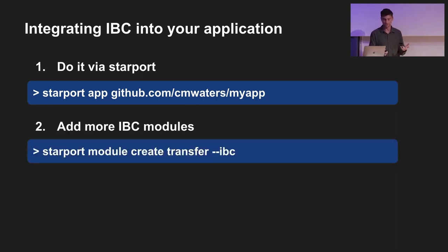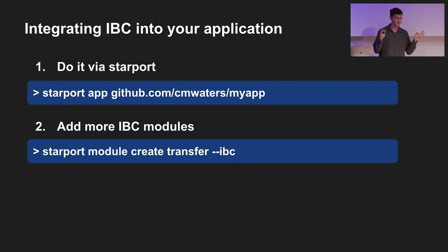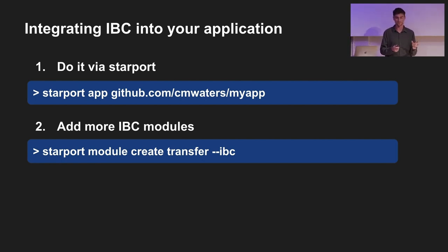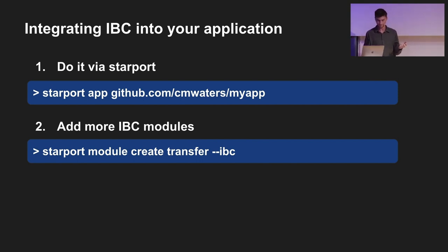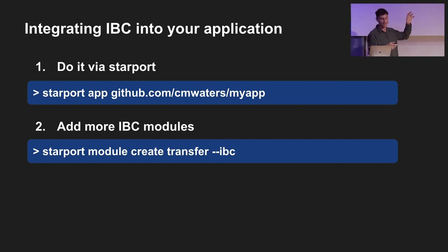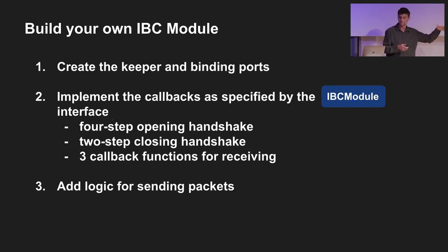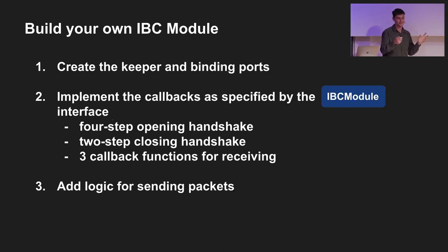If you want to create a module, just as Harpreet explained, you run `starport module create`, with the module name and the `--ibc` flag. That sets up all the scaffolding for how you actually hook your module and connect it to what the IBC stuff does - done through an interface. The scaffolding does the job of creating the keeper and binding ports. A bit more detail than my network card analogy: the way that IBC works is you have channels and you have ports.